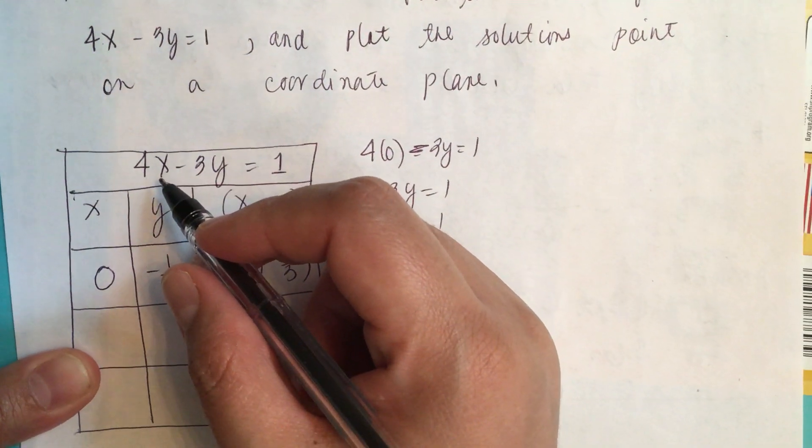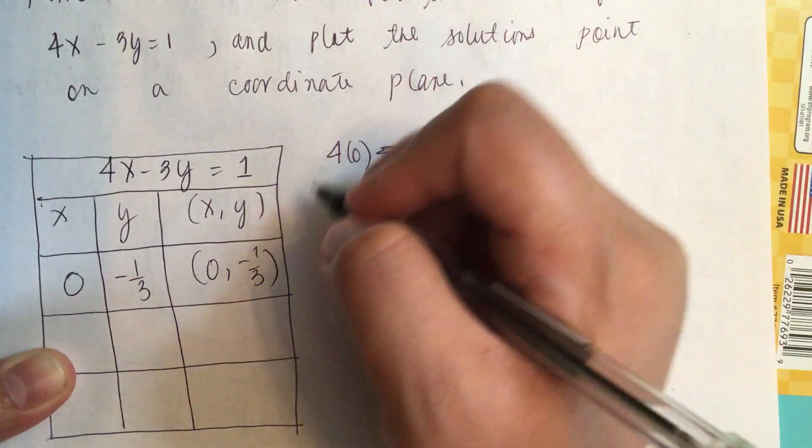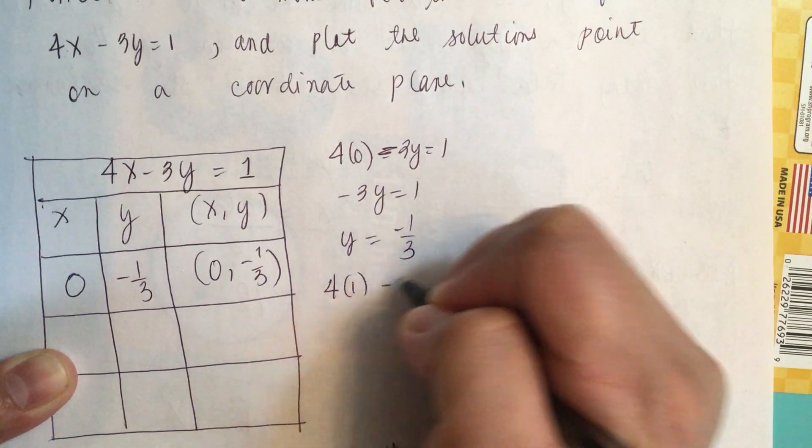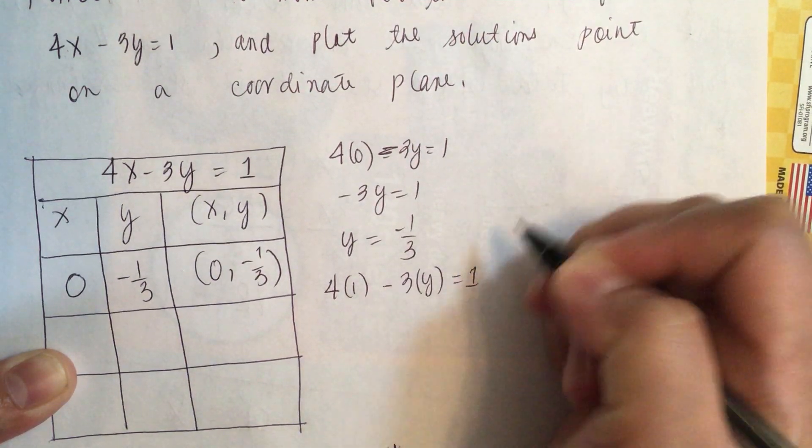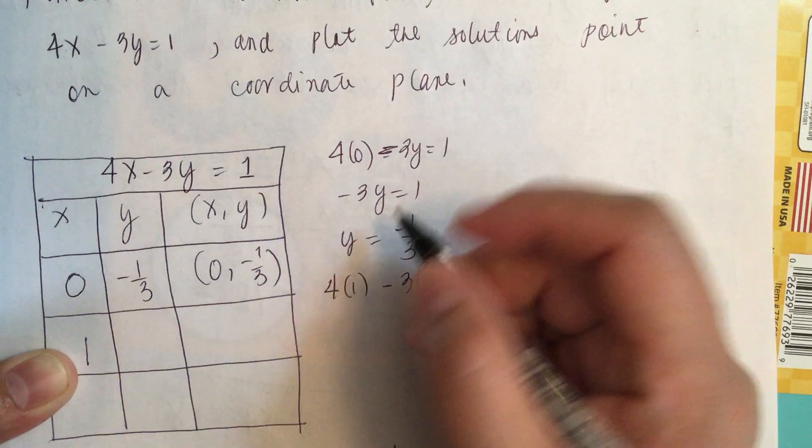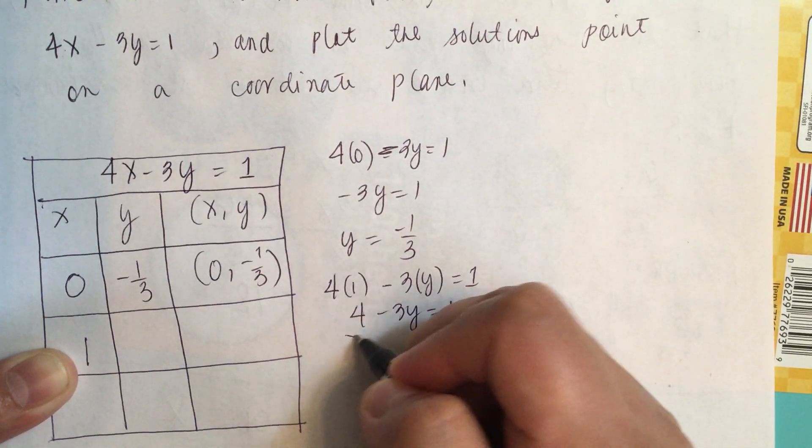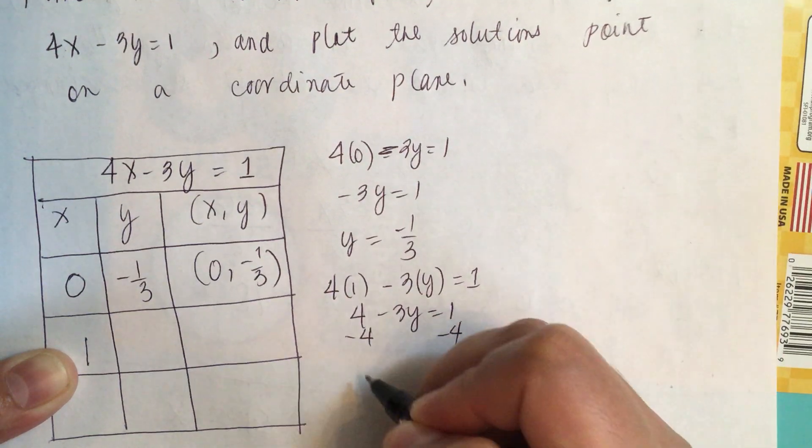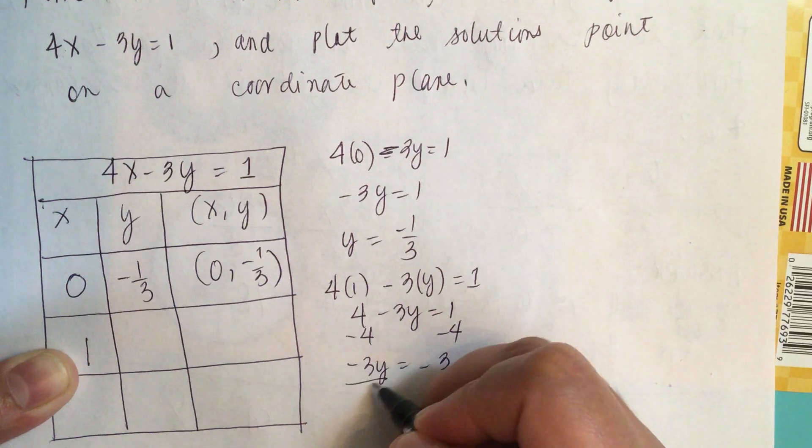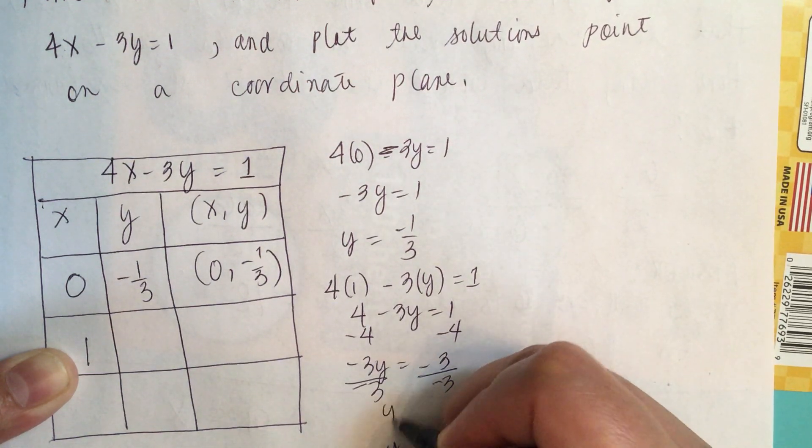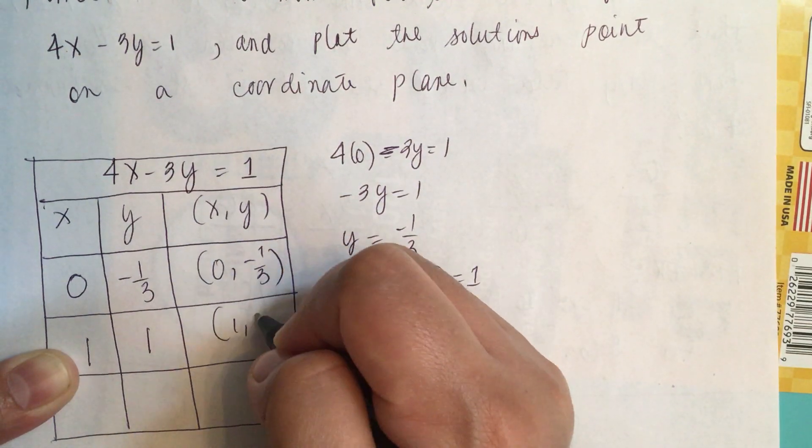And when x is 1, we have 4 times 1 minus 3y equals 1. So 4 minus 3y equals 1. Subtract 4 from both sides, minus 3y equals minus 3. Divide by negative 3, y equals 1. So here's another point.